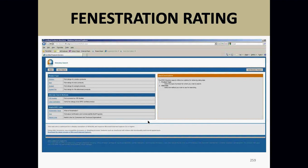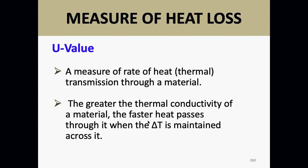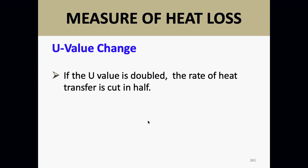The measure of heat transmission rate through a material is the U-value. The greater the thermal conductivity, the faster heat passes through when a standard temperature delta-T is maintained. When the U-value is doubled, the rate of heat transfer is cut in half — which is different from R-value behavior.